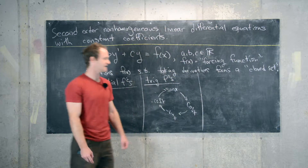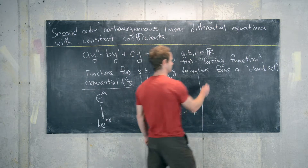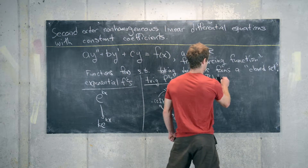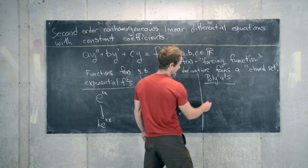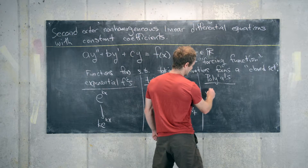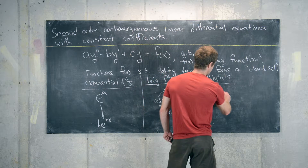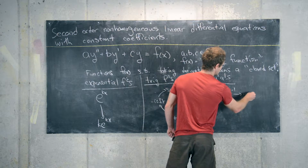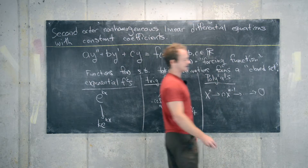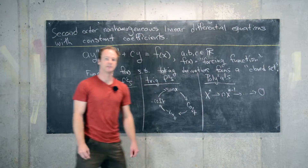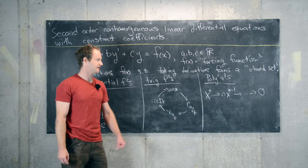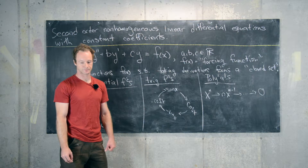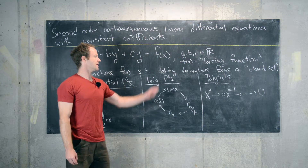The next family is polynomials. This comes from the fact that if you take the derivative of x to the n, you get n times x to the n minus 1, and eventually you'll get zero at the end. So if you take repeated derivatives of polynomials, you'll eventually get down to zero, forming a closed set.